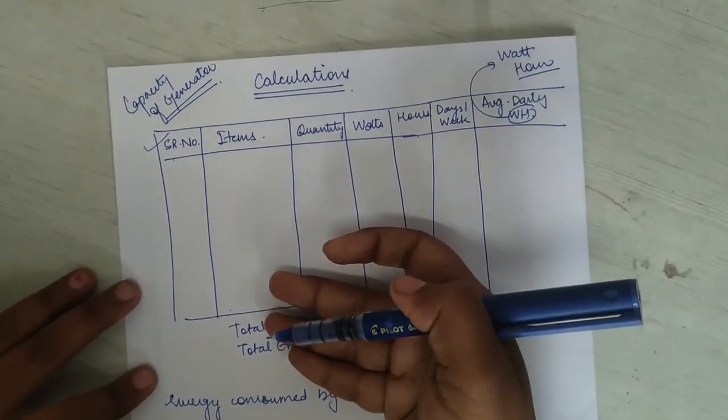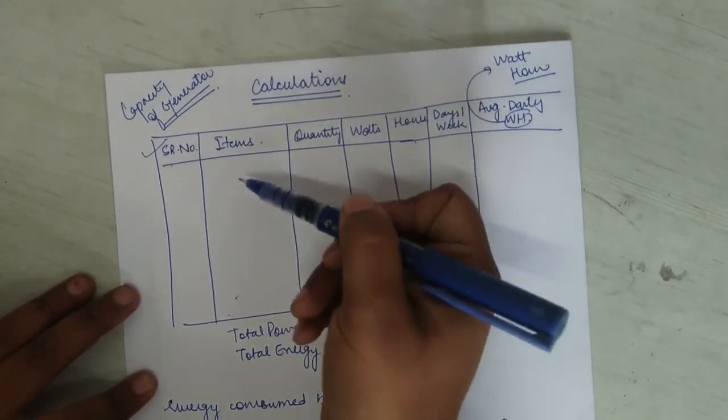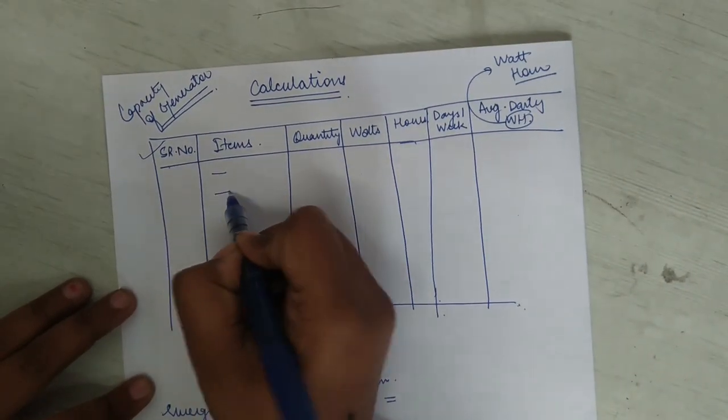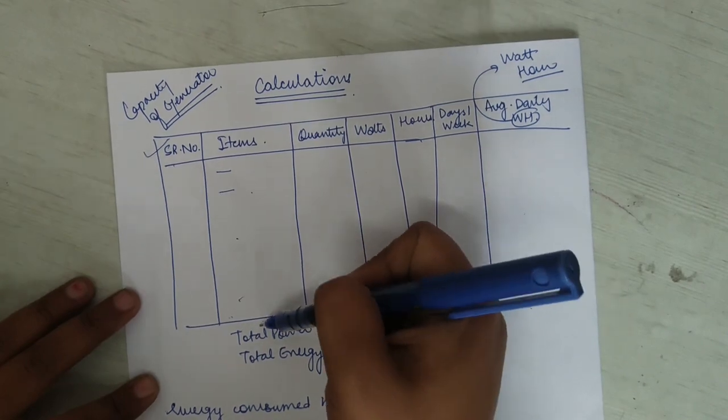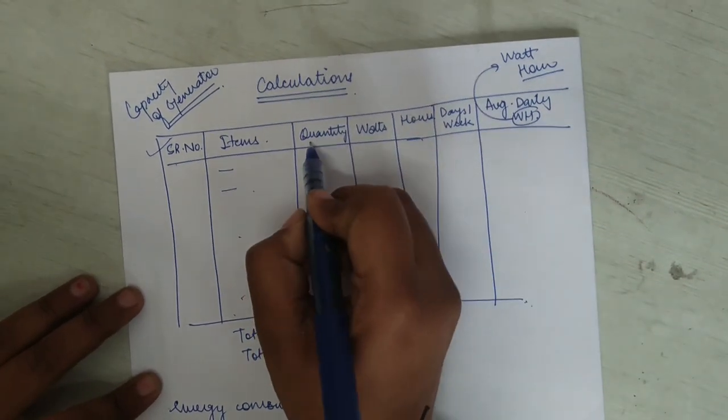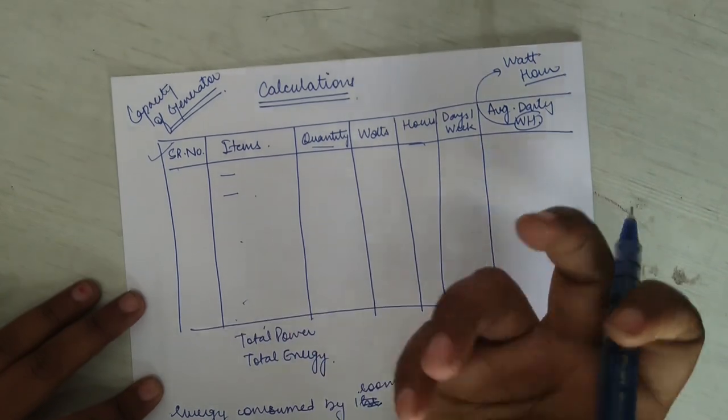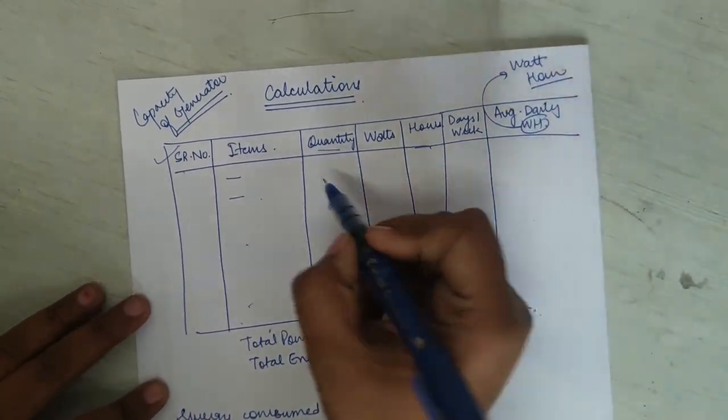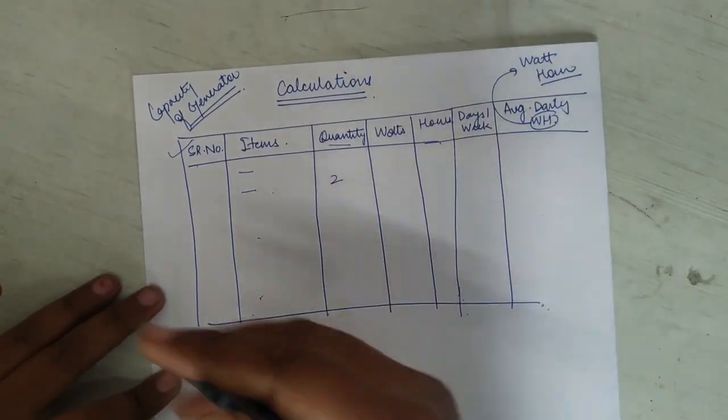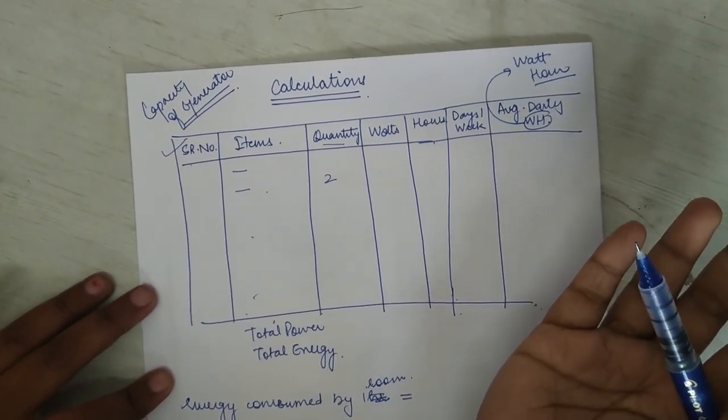So this is the type of table we made for the calculation. The first column which we make is of serial number, and then the items which you have placed—the appliances which you are going to place in your room that are needed to be added, like bulbs, ceiling fans, ACs, everything needs to be added one by one. Then their quantity, the number should need to be added.